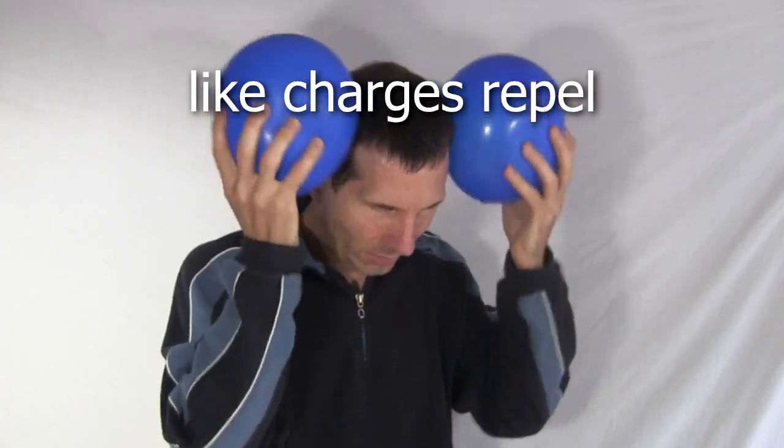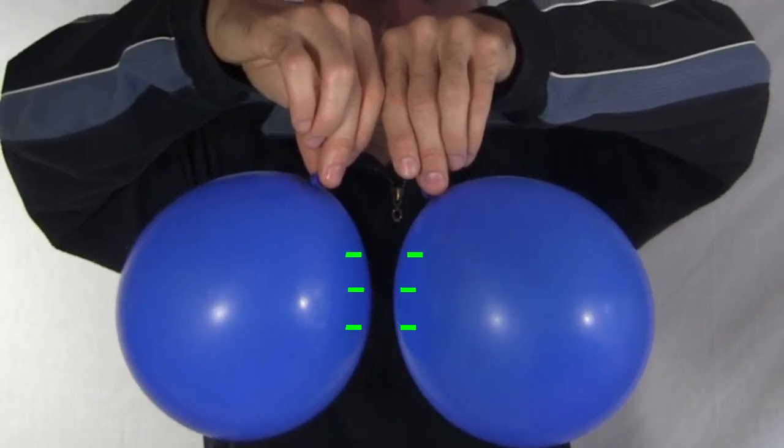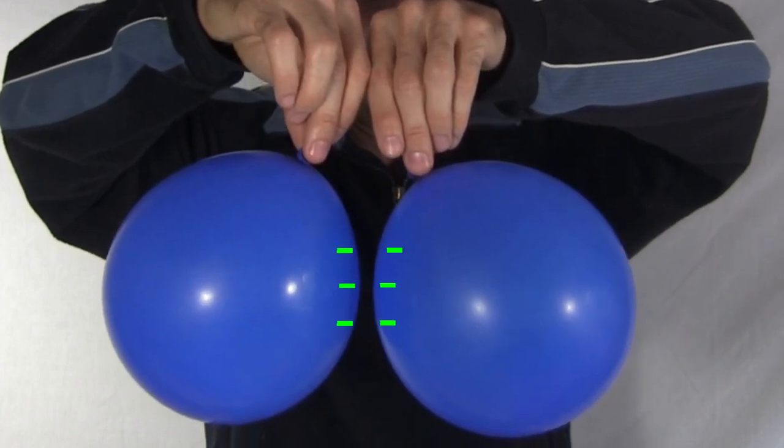And like charges repel each other. These two balloons both have extra negatively charged electrons where they were rubbed, so they repel.